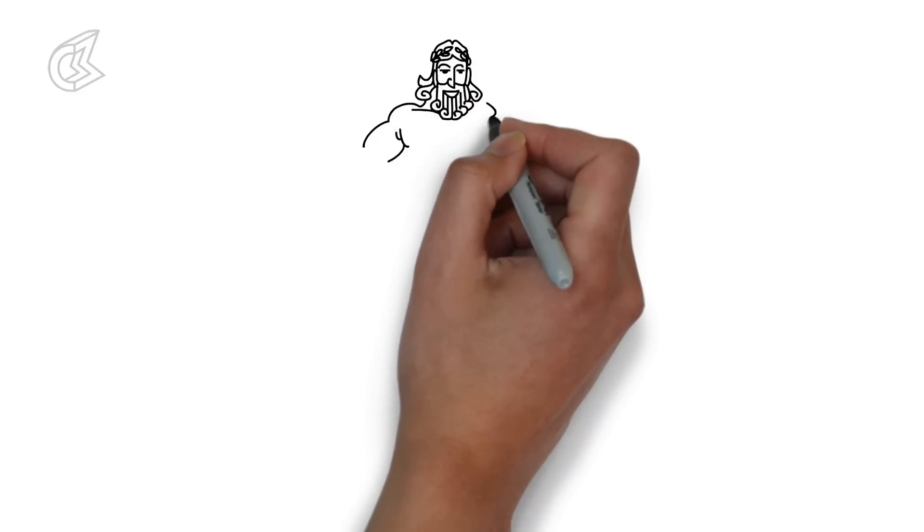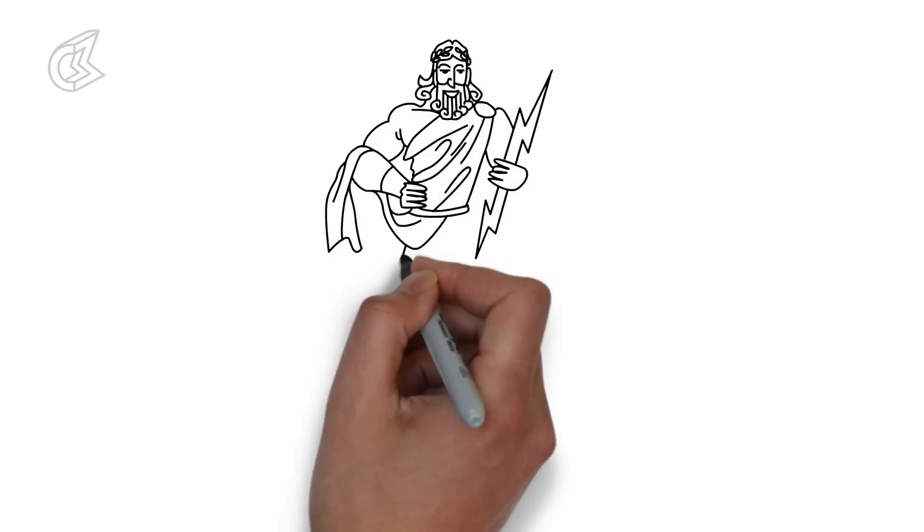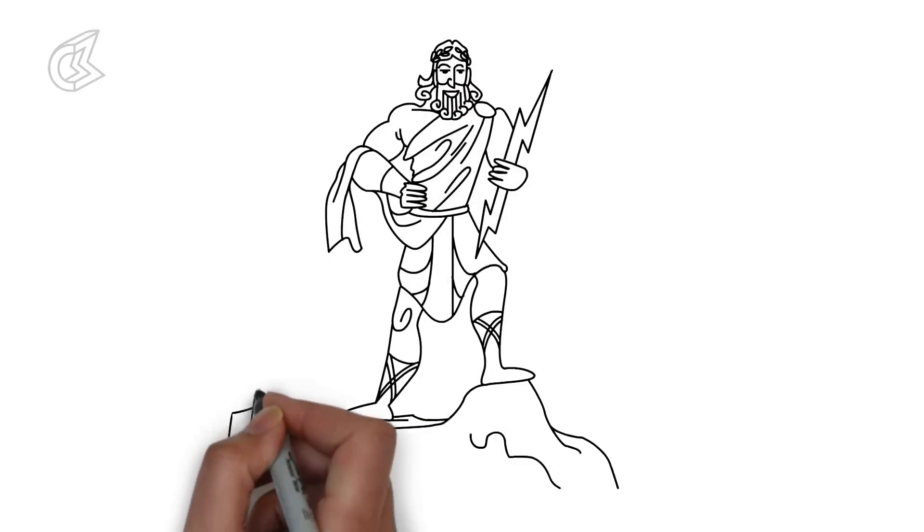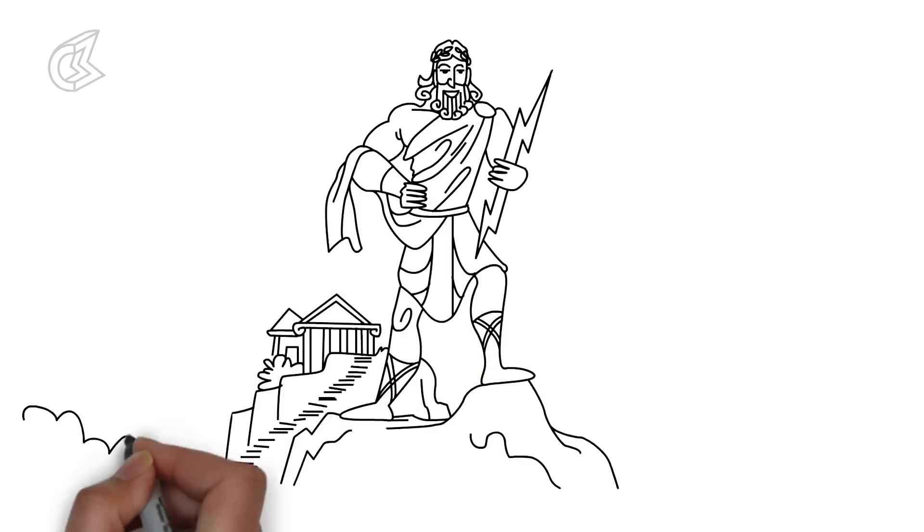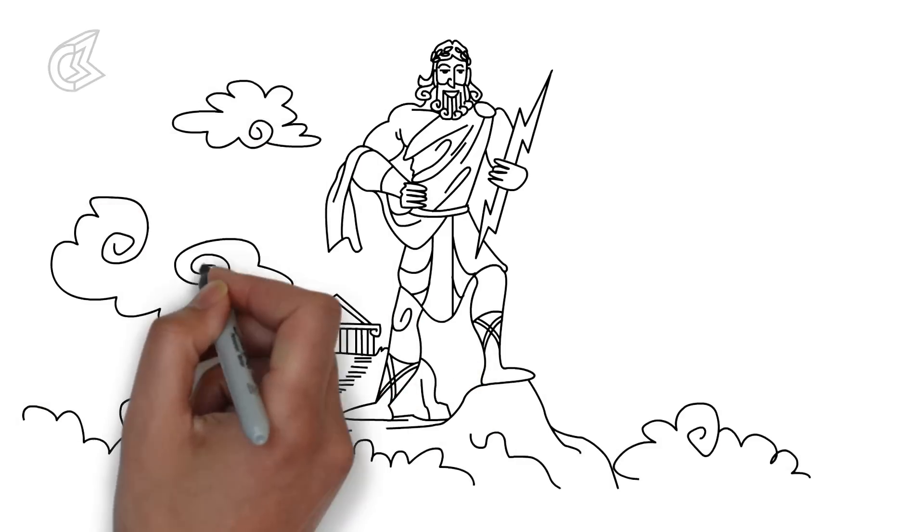Zeus was the Greek god of the sky and ruler of all Olympian gods. He lived on Mount Olympus and like Indra of Hindu mythology, held power over thunder.